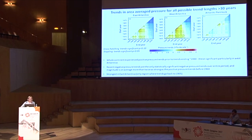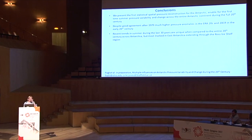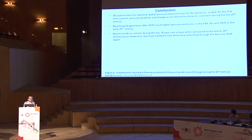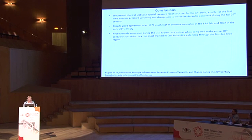In conclusion, we present the first statistical spatial pressure reconstruction focused specifically on the Antarctic, enabling for the first time the examination of pressure variability and change across the entire Antarctic. These are first results being written up for publication. Although it only goes back to 1905, this product will be useful for researchers with proxy records over the Antarctic or sub-Antarctic regions. There is less good agreement with reanalyses in the early 20th century, and recent trends in summer during the last 30 years are unique when compared to the full 20th century across Antarctica, with trends most marked in East Antarctica extending to the Ross Ice Shelf region.